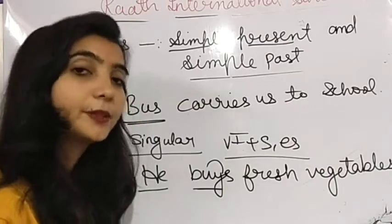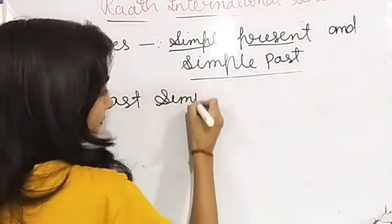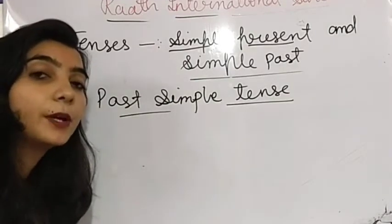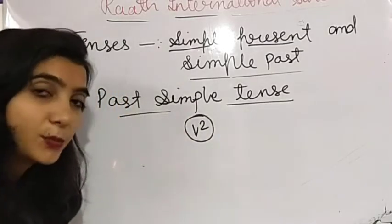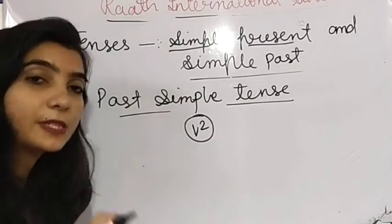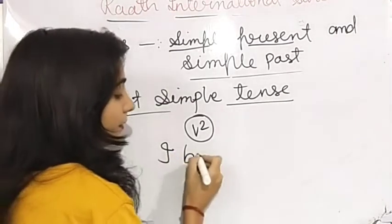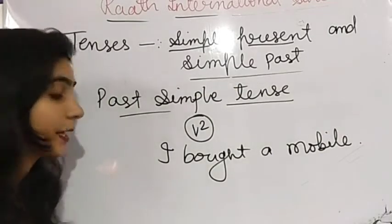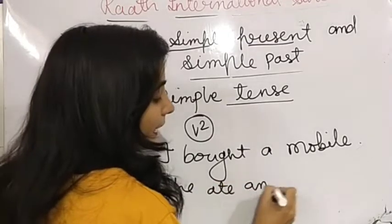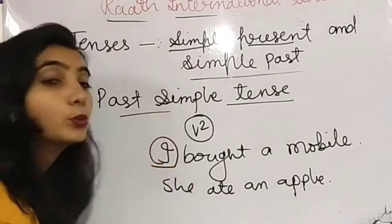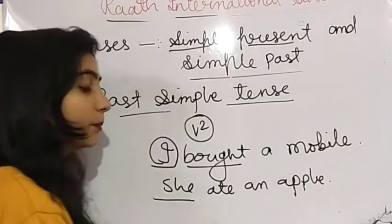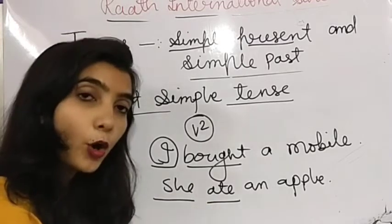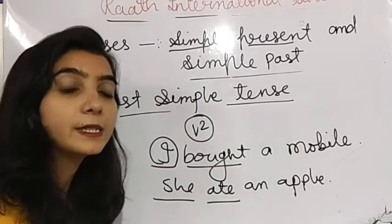Now I'm going to talk about simple past tense. When we make simple sentences in simple past tense, we use verb second form. It doesn't matter whether the subject is singular or plural — we always use verb second form. For example: 'कल मैंने एक mobile phone खरीदा' — I bought a mobile yesterday. Also: she ate an apple. Whether subject is singular or plural, we use only verb second form when talking about past events.